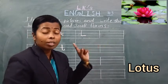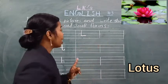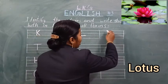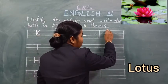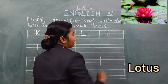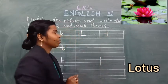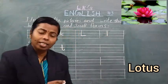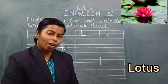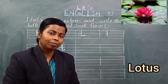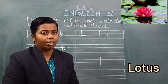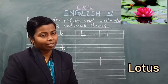Small letter L likhna hai. Small letter L kaise likhenge? First line se lekar third line tak ek standing line — that's it. This is small letter L.